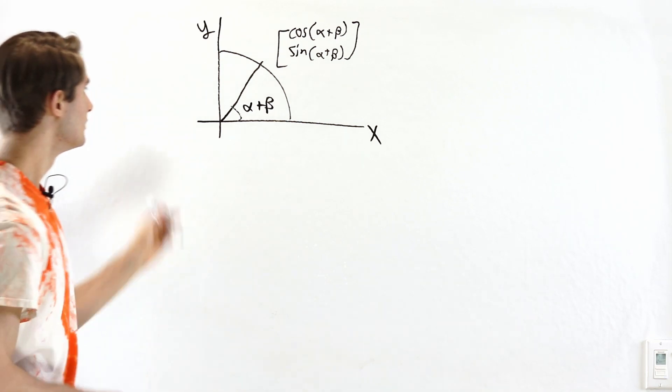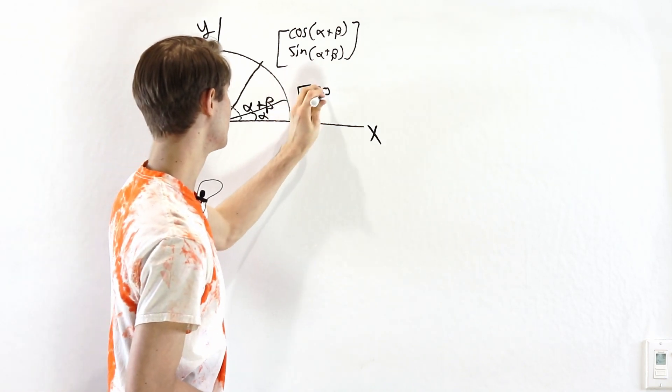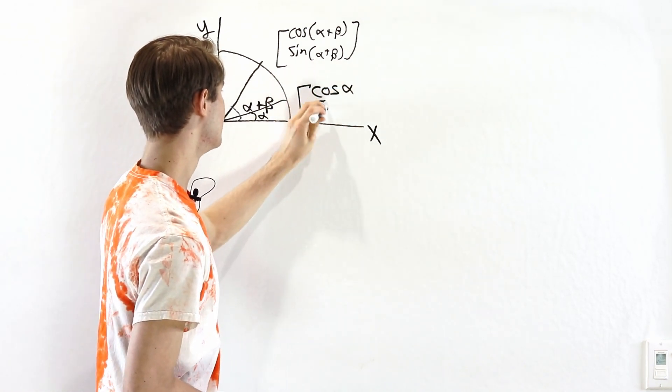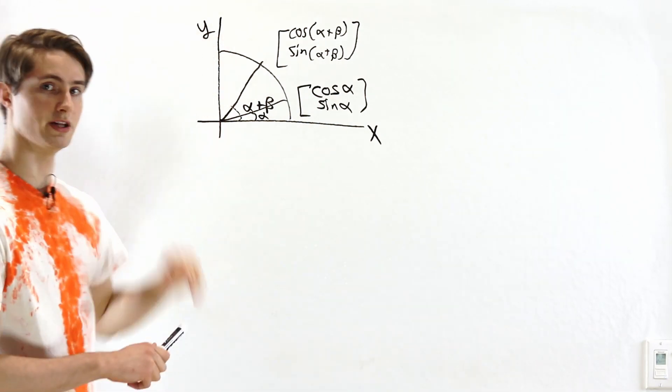Now we know what we get if we rotate by an angle of alpha like this. This of course is going to give us cosine alpha and sine alpha. So what if we want to get to alpha plus beta?